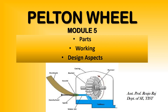Turbines are classified according to the type of energy available at the inlet. According to energy type, turbines are broadly classified as impulse and reaction turbines. An impulse turbine has only kinetic energy at the inlet; a reaction turbine has both kinetic and pressure energy. According to the direction of flow through the runner, turbines are classified as tangential flow, radial flow, axial flow, and mixed flow. They are also classified by head — high, medium, or low — and by specific speed.